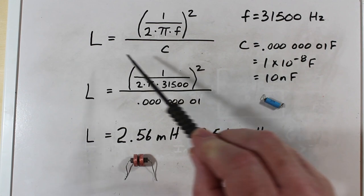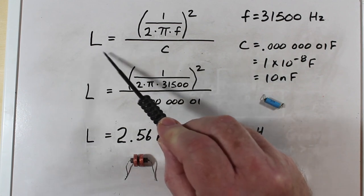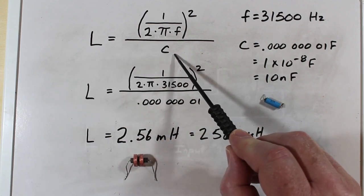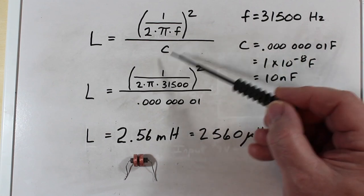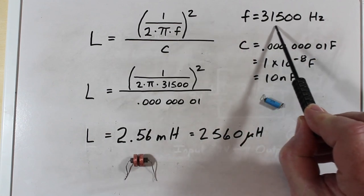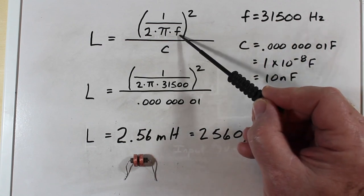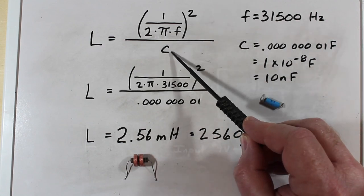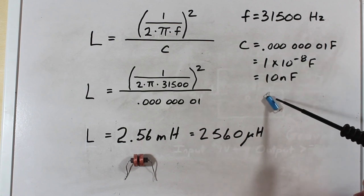So here's the formula that we're going to use to find out the size of our inductor. We now have all the unknowns figured out that we need to fill this formula in. We found that our frequency was 31,500 hertz. That's our F right here. We know our capacitor size because we chose it. That's our 10 nanofarad right here, 1%.